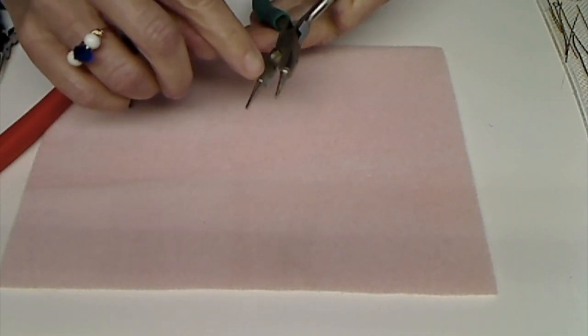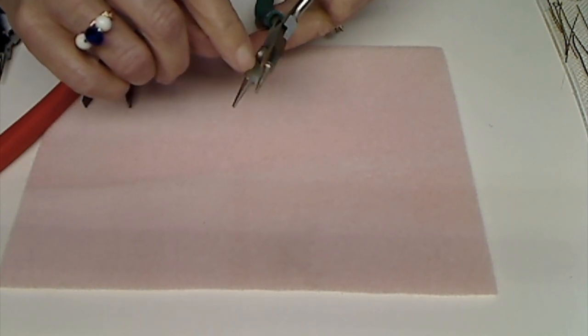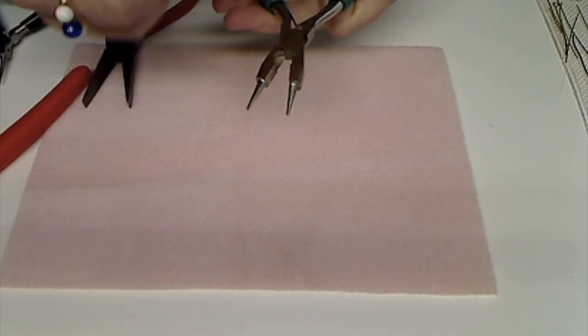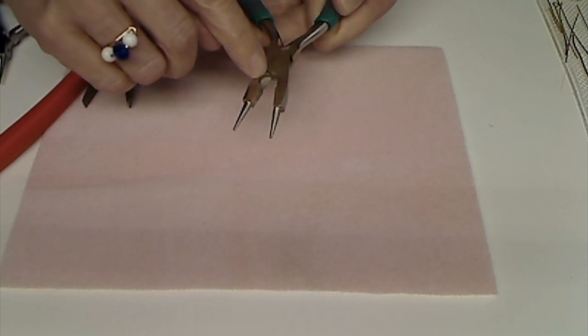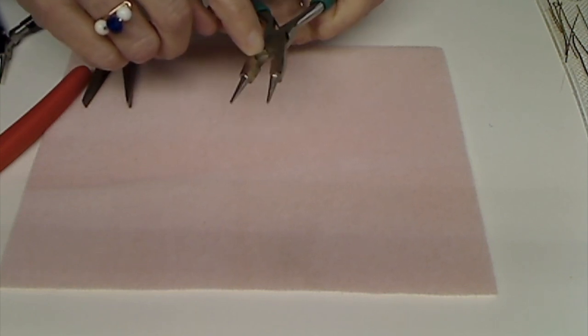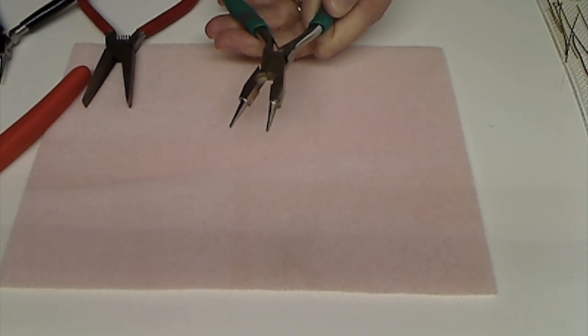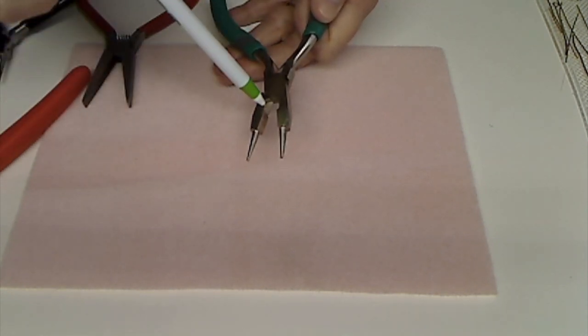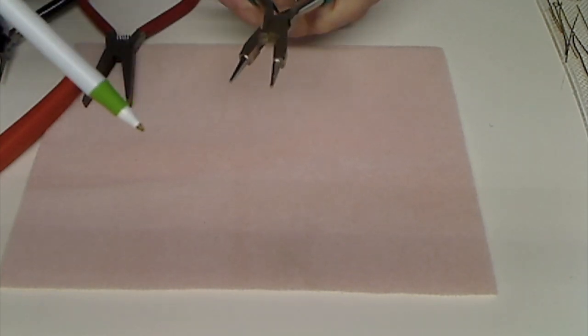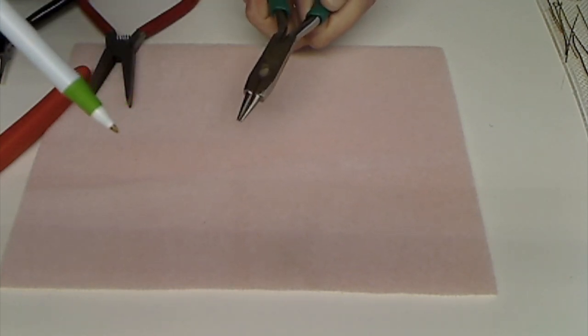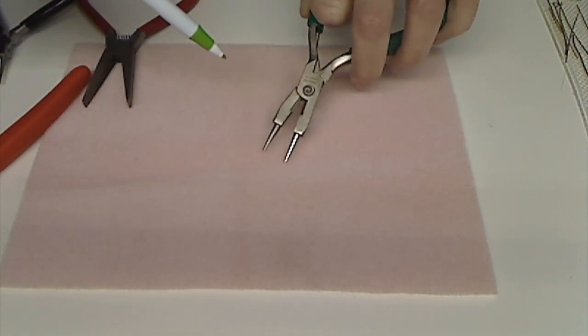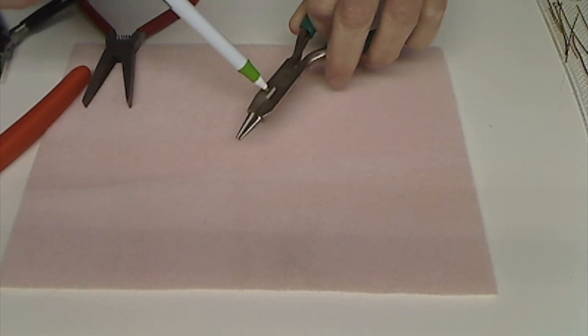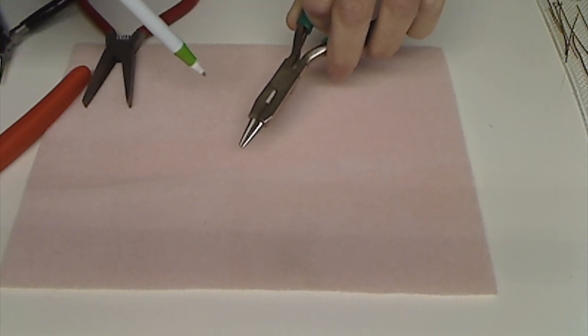So here you've got your round nose part of the pliers for making circles. Then you've got a flat jaw in here that you can use to close things or manipulate wire.